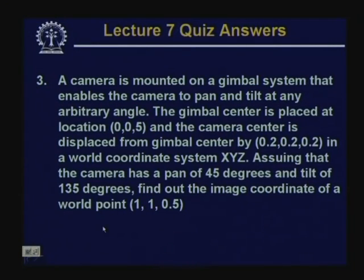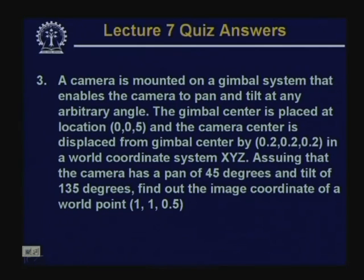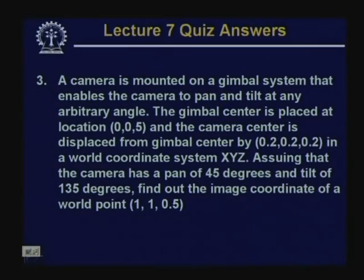Problem 3: A camera is mounted on a gimbal with center at location [0.05, ...] in world coordinates, camera center displaced from gimbal by [0.2, 0.2, 0.2], with pan of 45 degrees and tilt of 135 degrees. Find the image coordinate of world point [1, 1, 0.5]. This is solved directly by substituting into the generalized imaging setup transformation matrices G, R_theta, R_alpha, and T, then applying the perspective transformation P.